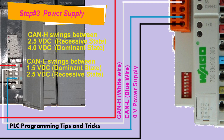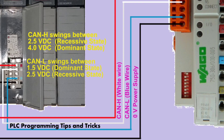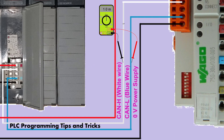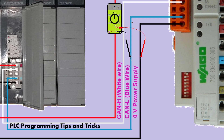Verify network voltage: DeviceNet is a three-wire differential voltage network. Communication is accomplished by switching the CAN high white wire and CAN low blue wire signals relative to the V-negative black wire. The CAN high swings between 2.5 volt DC in the recessive state and 4.0 volt DC in the dominant state, while the CAN low swings between 1.5 volt DC in the dominant state and 2.5 volt DC in the recessive state. Check for shorts of CAN high negative or CAN high positive to the shield, or short circuit with the power supply zero voltage.